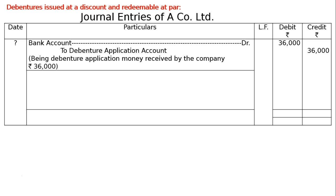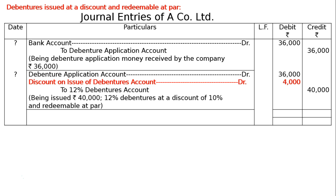Next, the due entry of debenture application: Debenture Application Account debited 36,000 — same credited for cancellation. Discount on Issue of Debentures Account debit — issued at a discount of 10%, 40,000 into 10% = 4,000. 12% Debentures Account credit, that is 40,000. Being issued Rs. 40,000, 12% debentures at a discount of 10% and redeemable at par. This is the narration.